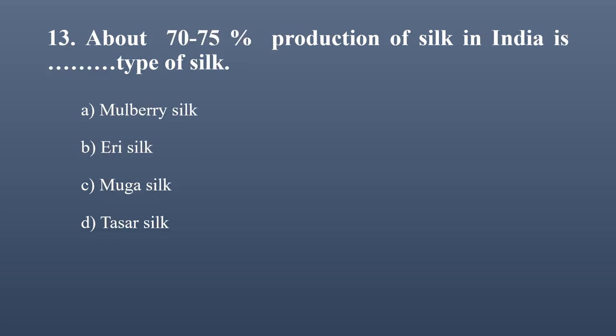About 70 to 75 percent of silk production in India is which type? Options: mulberry silk, Eri silk, Muga silk, Tassar silk. The correct answer is mulberry silk. Mulberry silk moth is domesticated and its continuous silk thread has high demand in the market. Also, Eri silk is called Ahimsa silk because the pupa inside the cocoon is never killed.